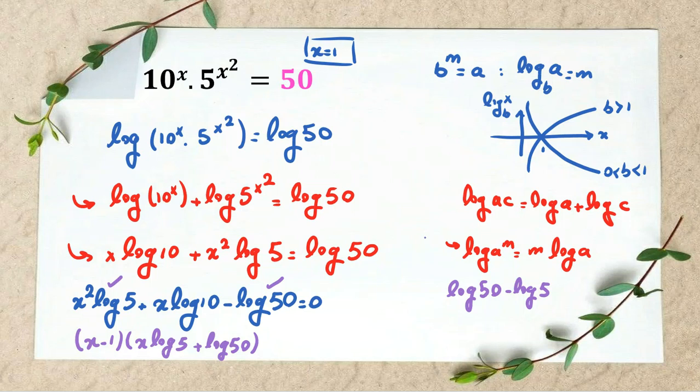And let me tell you something, we have another rule in logarithm. Log 50 minus log 5. So if we have subtraction between two logs, for example log a minus log c, then we say it is log a over c. So log 50 minus log 5 is log 50 over 5, which is log 10, so this part is also okay.